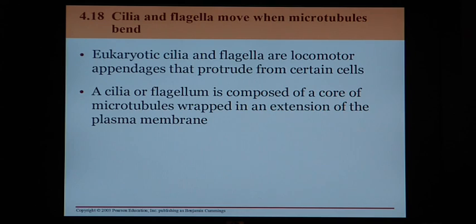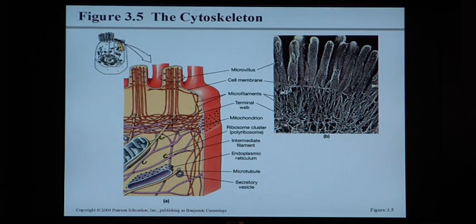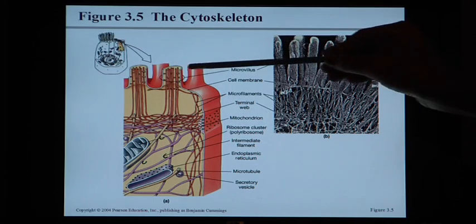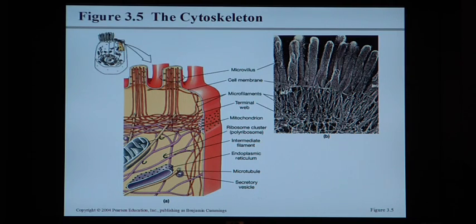The cytoskeleton can also help make cilia and flagella. We're already familiar with flagella — little whip-like tails that help move the cell from place to place. Cilia are little hair-like projections that help move fluids across a cell surface. In these pictures we can see cilia on top of the cell — little hair-like projections that move fluids across the cell surface.